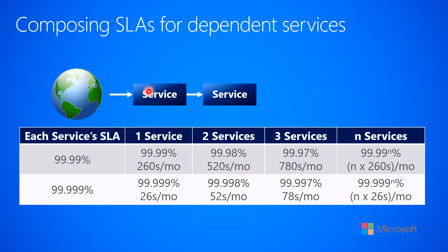This service could be down 260 seconds per month, and this service could be down at a completely different 260 seconds per month. But if the two services have a dependency on each other, that means that if either one is down, they look like they're down to your customer — meaning you're now at 520 seconds per month.